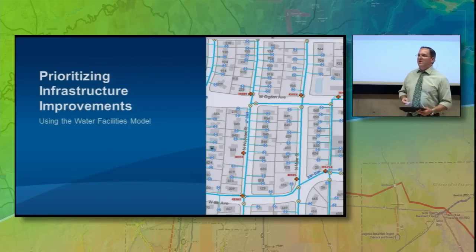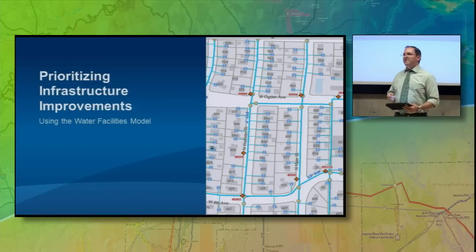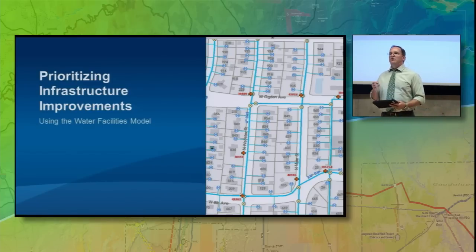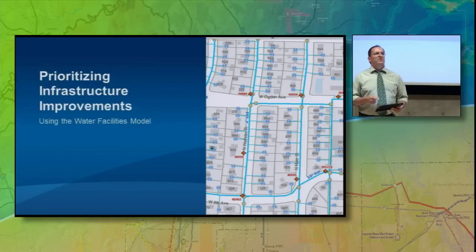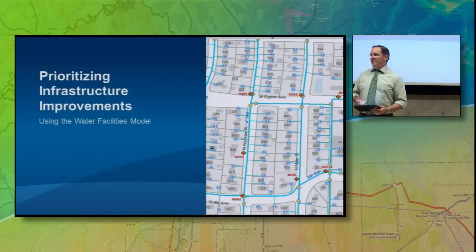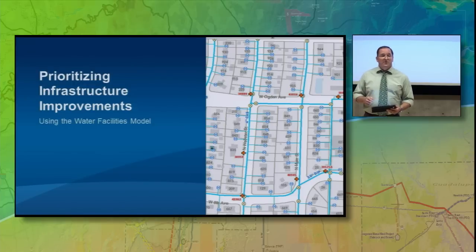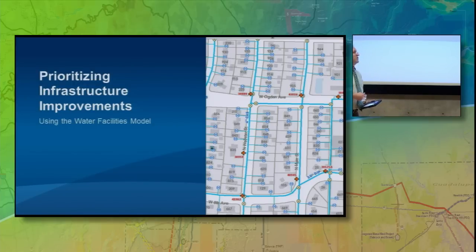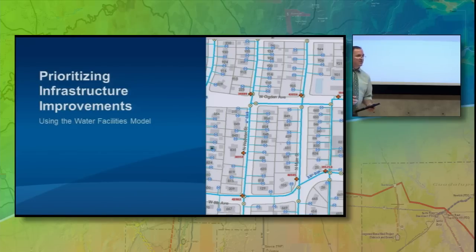By using a geometric network, they could actually identify the most critical infrastructure that they have — the infrastructure that, if it failed, would cause the most disruption in the area. That's where they want to target their maintenance efforts. So Harry's going to show us how we can use a geometric network to help identify these types of critical infrastructure for this prioritization project.